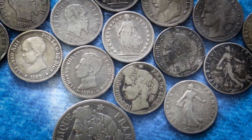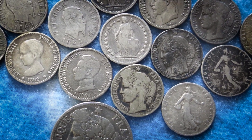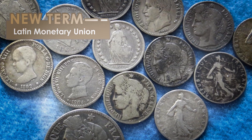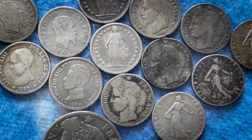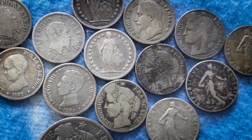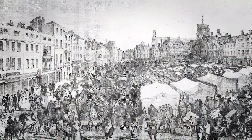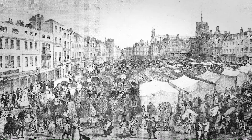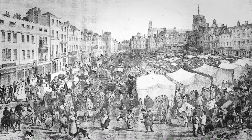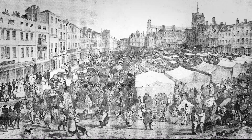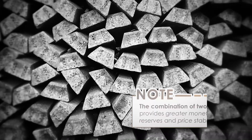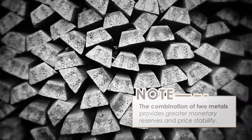In order to overcome this problem, France, alongside Belgium, Italy, and Switzerland formed the Latin Monetary Union in 1865, as an attempt to implement the system on a worldwide scale. In the following years, about 20 nations agreed to join the union. Bimetallism provided a free and unlimited market for gold and silver, imposed no restrictions on the use and coinage of either metal, and made all other money in circulation redeemable in either gold or silver. This system was preferable to monometallism since the combination of two metals provides greater monetary reserves and price stability.